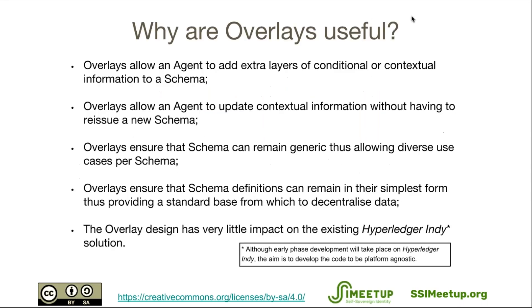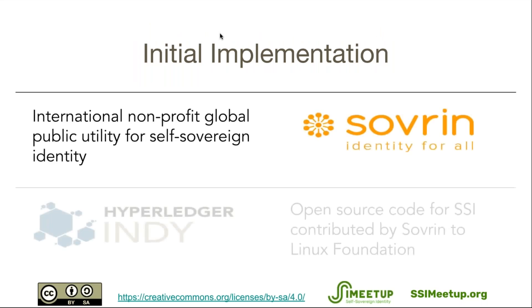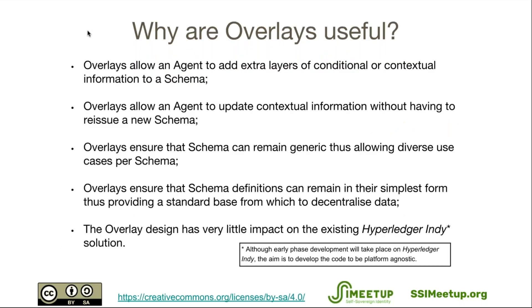So why are overlays useful? Overlays allow an agent to add extra layers of conditional or contextual information to a schema. They allow an agent to update contextual information without having to reissue a schema. Overlays ensure that schemas can remain generic, allowing diverse use cases per schema, and that schema definitions can remain in their simplest form, providing a standard base from which to decentralize data.